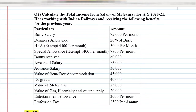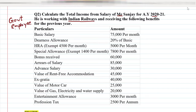We will solve question number one: calculate the total income of Mr. Sanjay for assessment year 2021. He is working with Indian Railways, so you have to take care of that. Since this is a government employee question, we will get the entertainment allowance deduction. The other points are completely the same; we will start in a simple way.